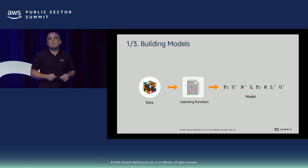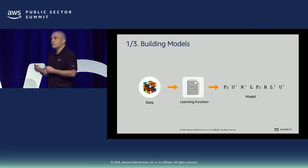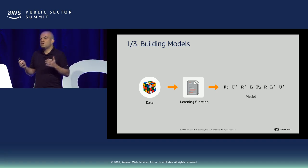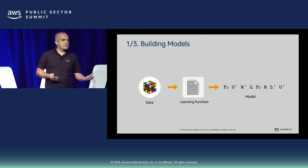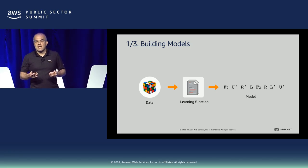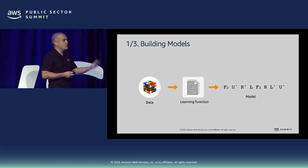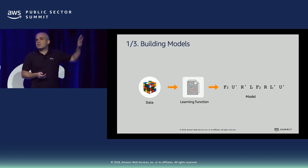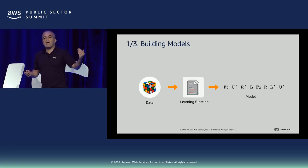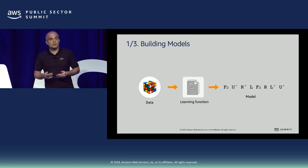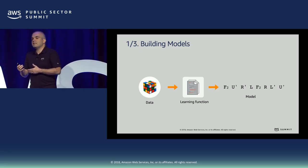The first step is building models. You create a learning function — basically code that defines how your computer learns patterns. Just like humans learn chemistry, English, and jokes in completely different ways, computers use different strategies based on the problem. Different data and different business problems require different learning strategies, using techniques like statistical models or neural networks. Once you have a learning function, you ingest data into it to produce what we call a model — a mathematical representation that tells you the answer you are looking for.